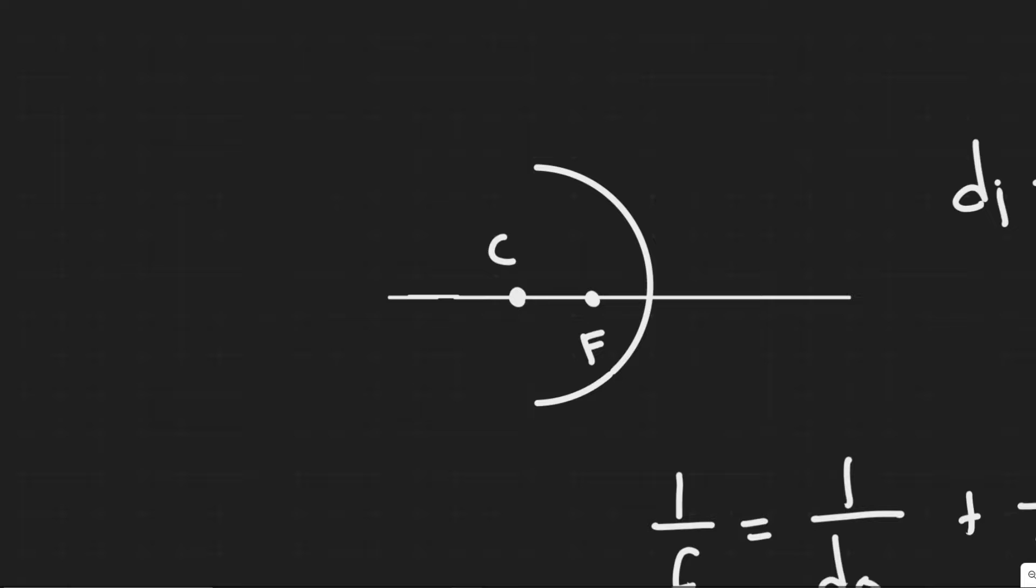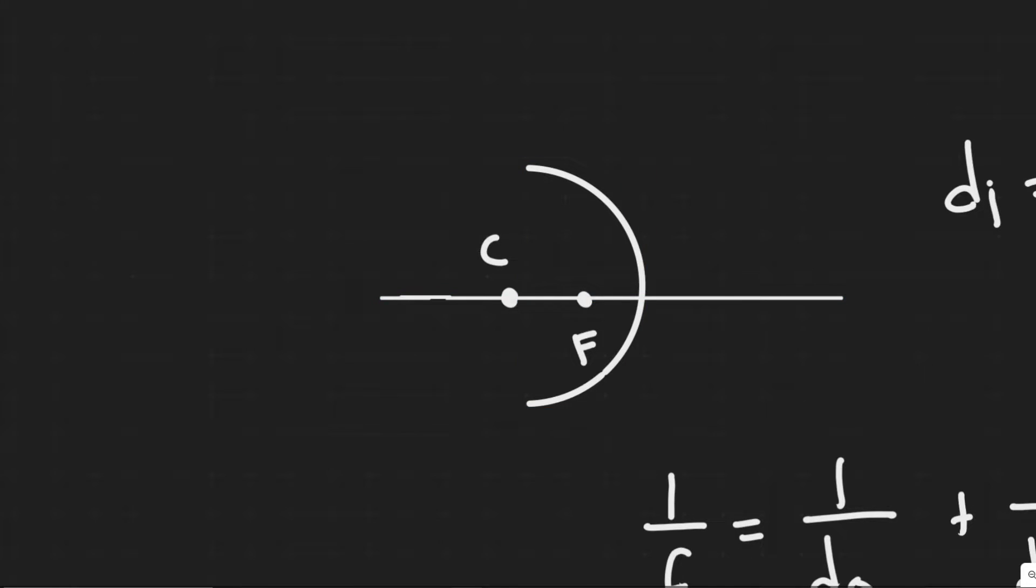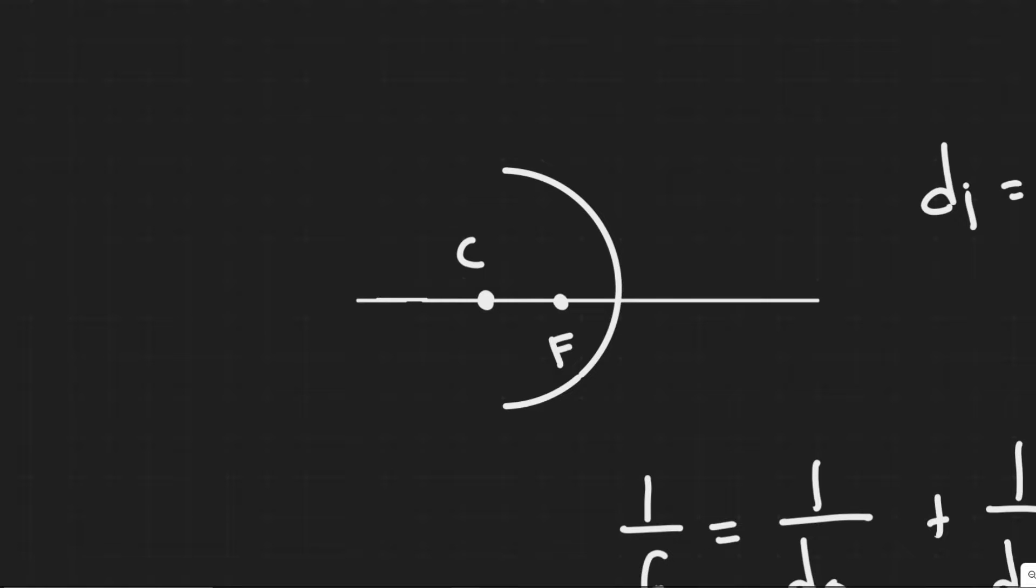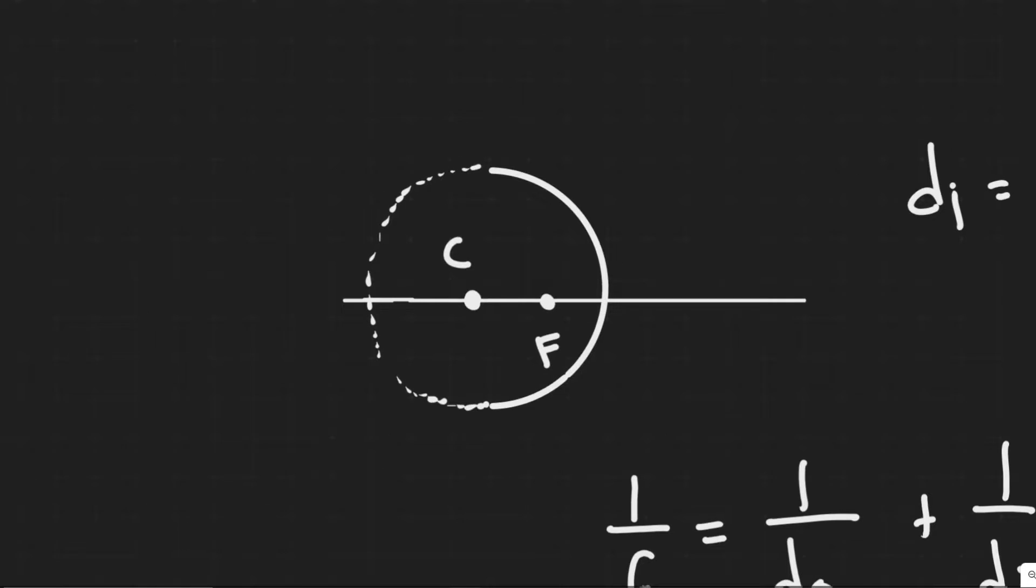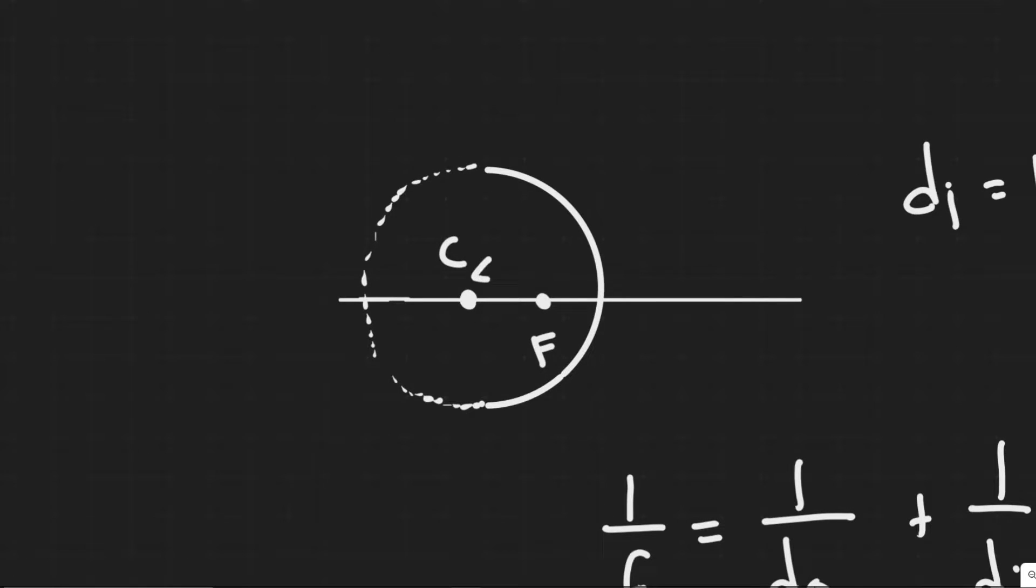And what we're trying to find here is the radius of the spherical surface from which the mirror was made. So the way I want you to think about this is as if this mirror was a circle. If we let C represent the center of the circle, R would just be the distance from C to this edge of the mirror here.